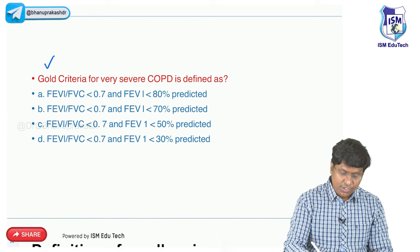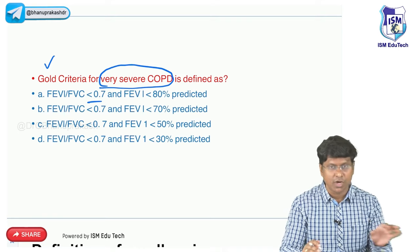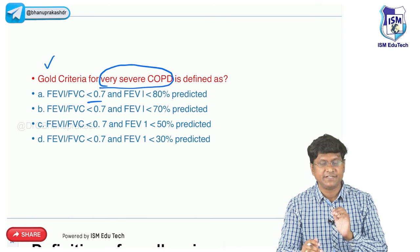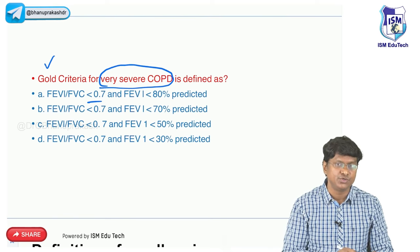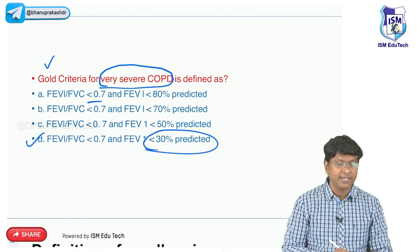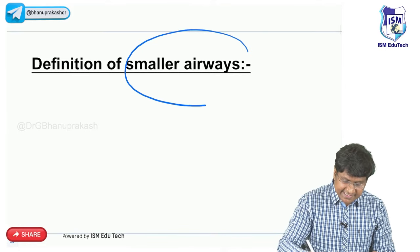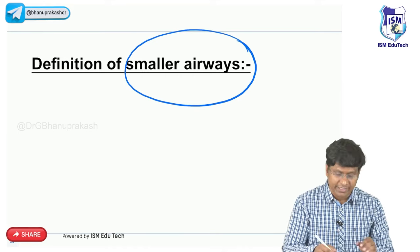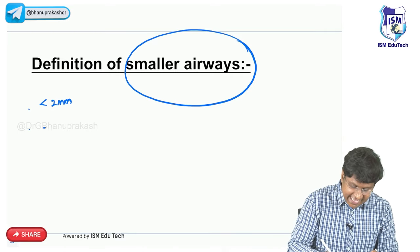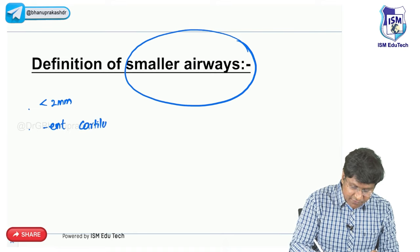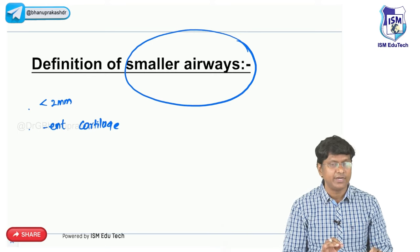To call it very severe COPD according to GOLD criteria, FEV1/FVC is reduced in all forms - less than 0.7 or 70%. But FEV1 should be less than 30% to call it very severe COPD. COPD is a disease of the smaller airways - defined as airways with internal diameter less than 2 mm and absence of cartilage, starting from the 8th generation onwards distally up to the alveoli.